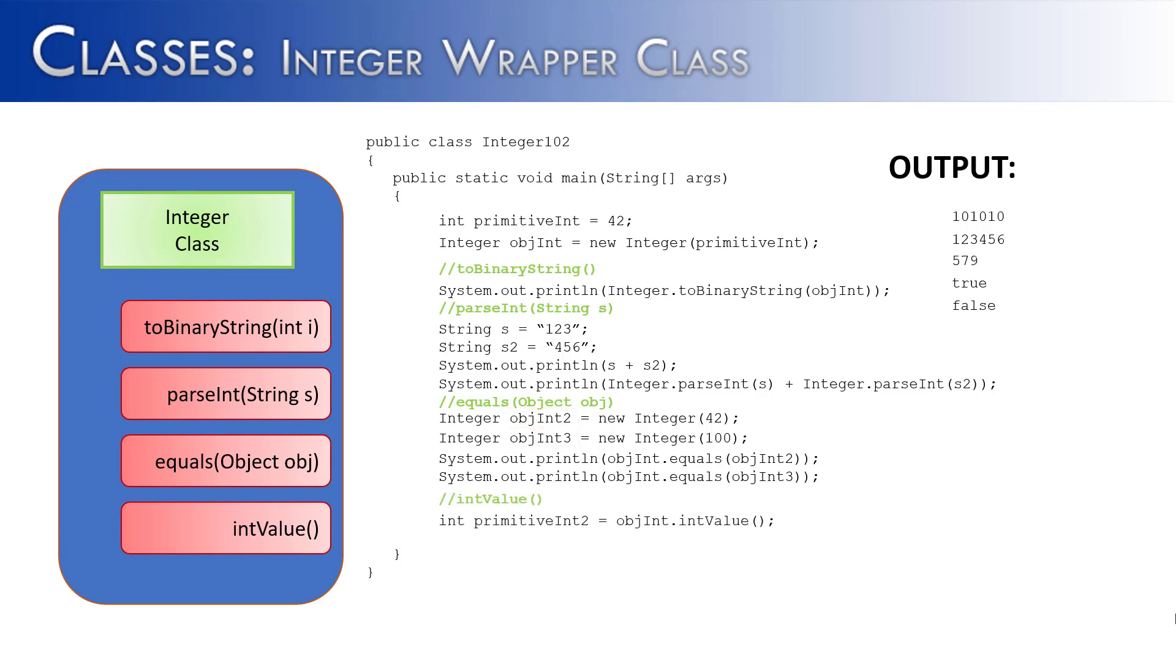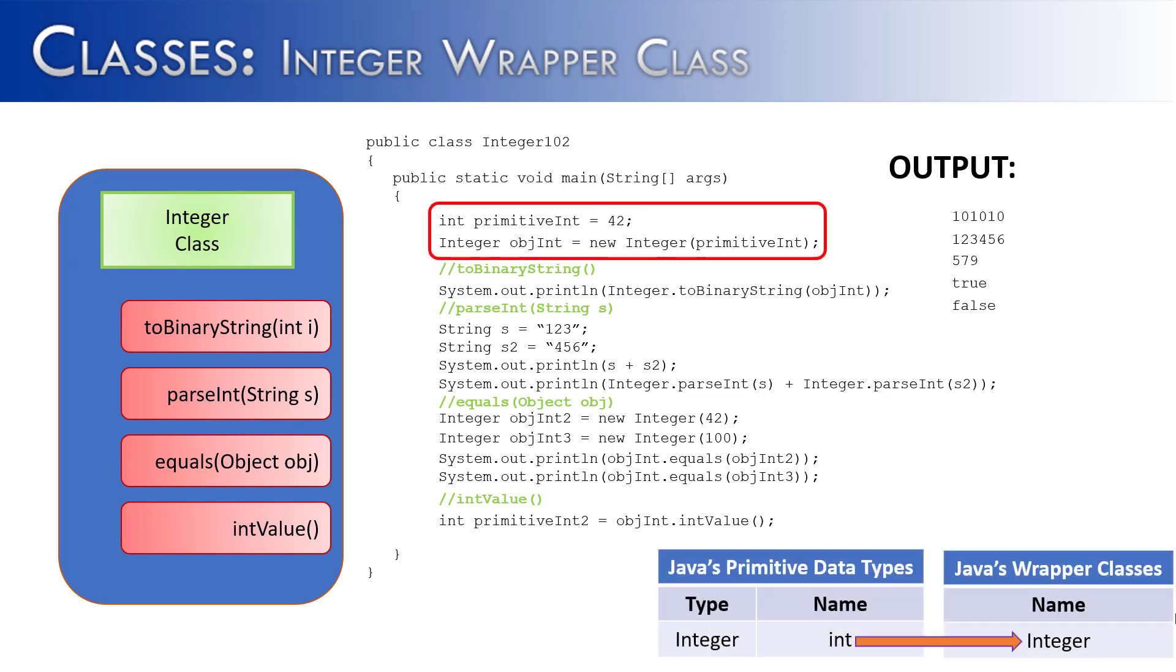Finally, I've saved intValue for last, and this is an interesting method because it's going to make a conversion between the primitive value and the object value. If you remember up here, what we have done is we have taken a primitive 42, and we have converted it into a wrapper class. But then the question becomes, can we go backwards? Can we take that new wrapper class integer value and convert it back into a primitive data type? And the answer is yes. That's exactly what intValue is doing. There isn't going to be any output, but what is going to be happening behind the scenes is it's going to unwrap the integer value and save it as a primitive value. So I think I've shown you a good representation of the methods inside of the integer class.